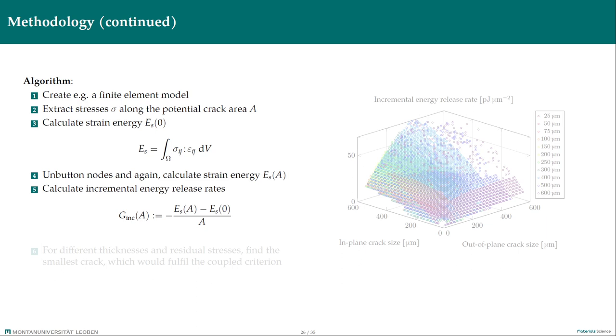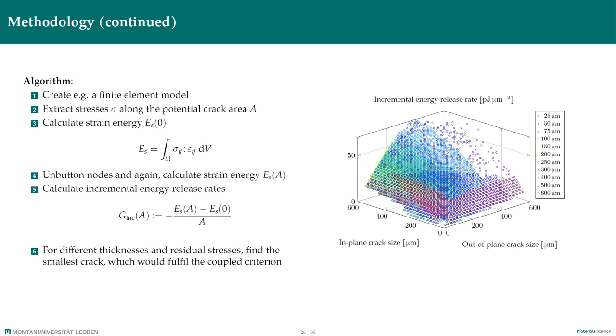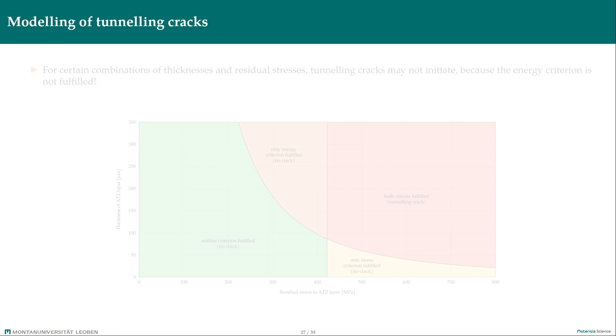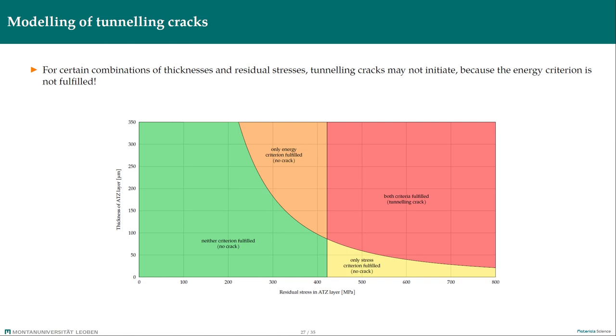Since the model is linear, we can rescale these results for arbitrary residual stresses. The remaining task is to find for given residual stresses, which we choose, a thickness for which none of all plausible cracks would fulfill the criterion of initiation. And we eventually find a combination of residual stresses, which is on the horizontal axis, and layer thicknesses, which are on the vertical axis, for which the plausible cracks would fulfill the stress criterion, that is on the right side of the vertical line in the middle, but not for the energy criterion, that is below the parabolic curve.